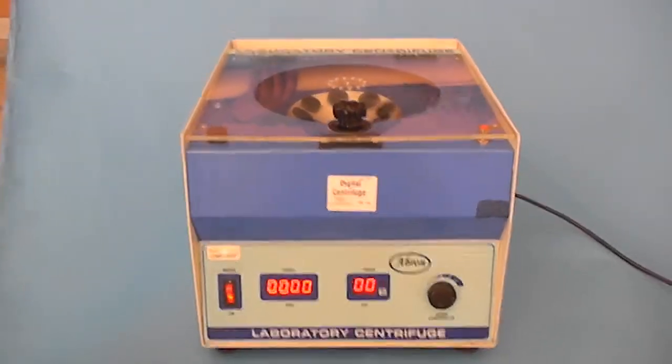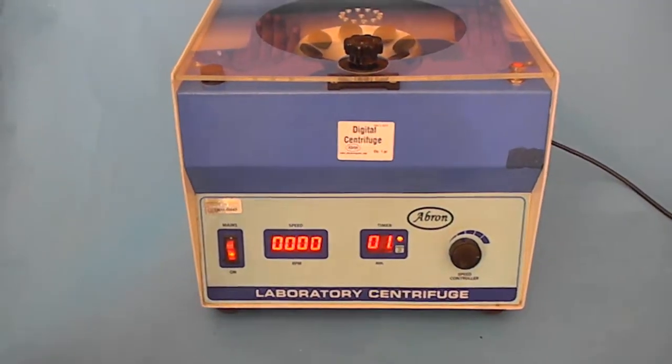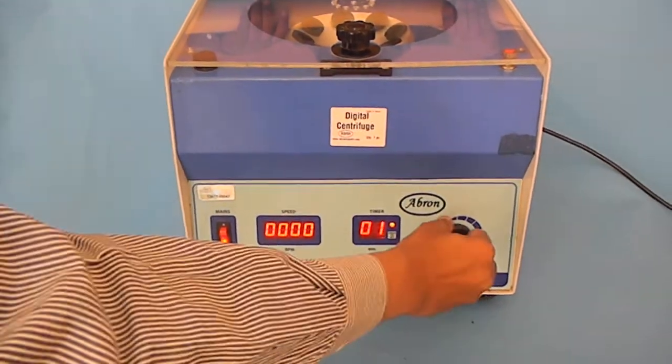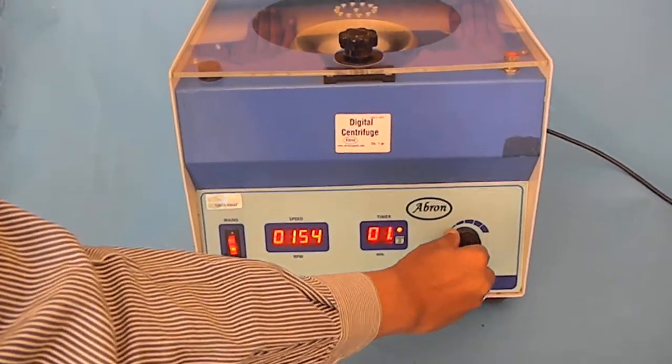There is a timer. You select the timer by one minute, then rotate the knob for speed control. Rotate it on the right side to full.